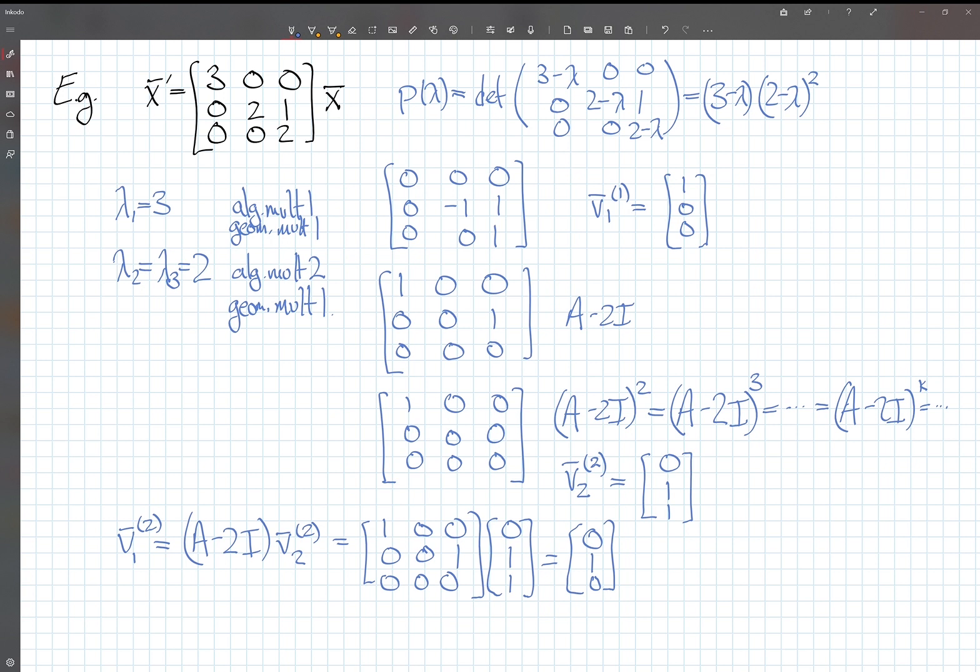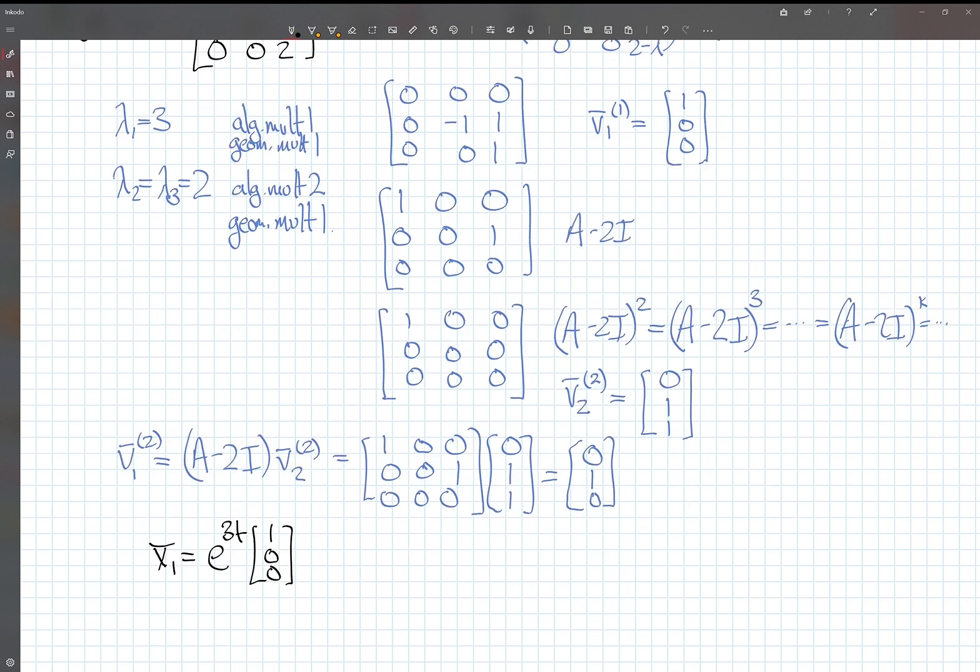Let's write down the solutions to this differential equation. The first solution comes from v1,1, just e^(3t) times v1,1. The other solutions correspond to the eigenvalue 2. There's our solution. You can check, in fact, that they give solutions and that they are linearly independent.